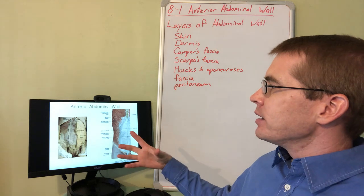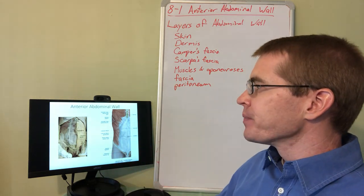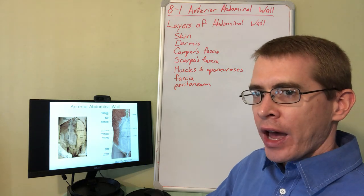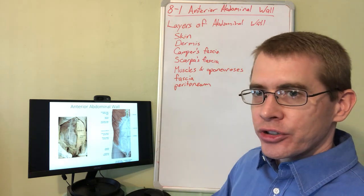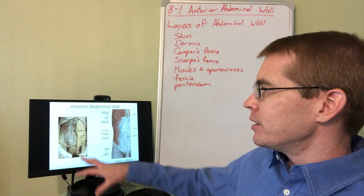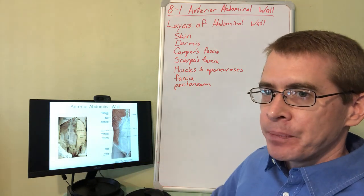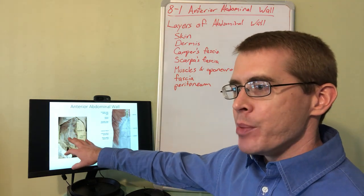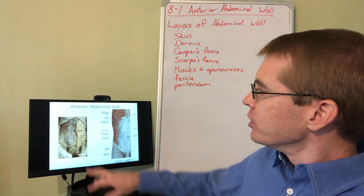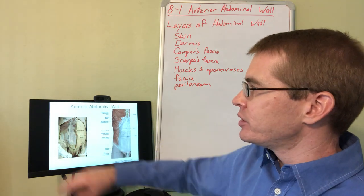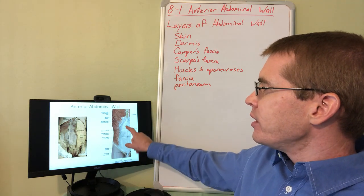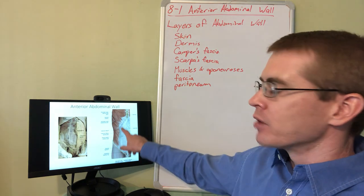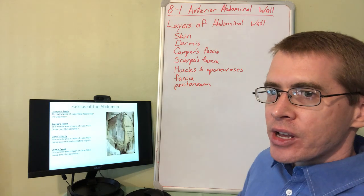The skin is the most external layer of the body wall, and as soon as we remove that we see the dermis as well as a layer of fatty superficial fascia. Some anatomist about 250 years ago named Camper got this fatty layer of fascia named after him, so we call that layer Camper's fascia. Deep to Camper's fascia we see a membranous layer of fascia called Scarpa's fascia. You can see in this photograph some of these different layers. The abdominal rectus muscles are actually enclosed in an aponeurotic sheath, and we'll talk more about all of these sheaths and layers as we continue going deep.